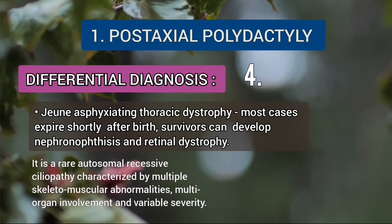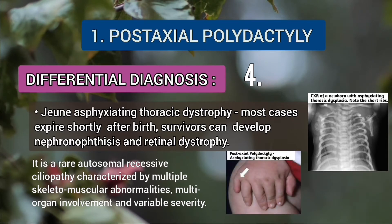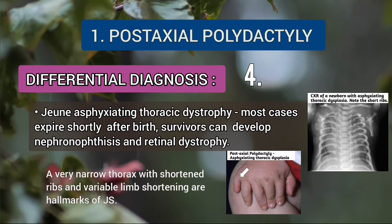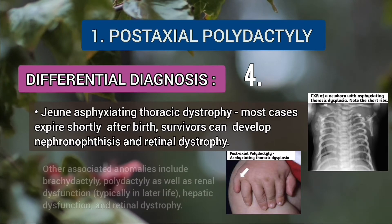Another differential is Jeune asphyxiating thoracic dystrophy. It is a rare autosomal recessive ciliopathy characterized by multiple skeletal and muscular abnormalities, multiple organ involvement, and variable severity. A very narrow thorax with shortened ribs and variable limb shortening are hallmarks of this syndrome.